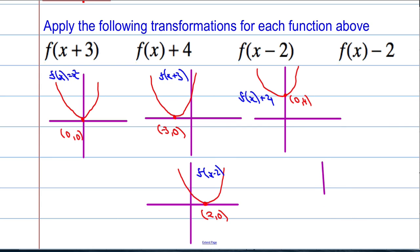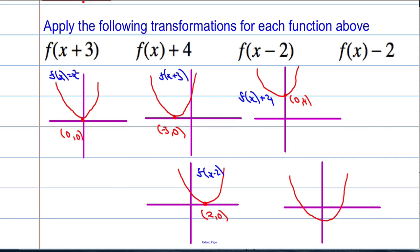f of x minus 2 — the negative 2 is on the outside, not inside the bracket. So that's telling me that it's a vertical translation. It's going to go down 2. The graph must look something like this, and if 0, 0 was the original point, it's shifted down 2 — it's now the point 0, negative 2.